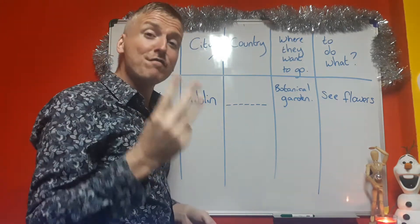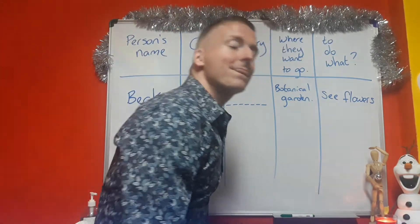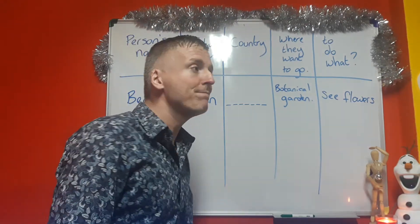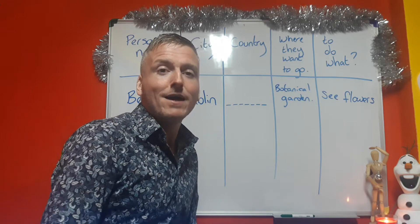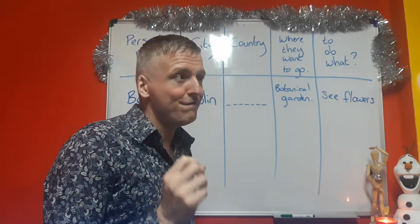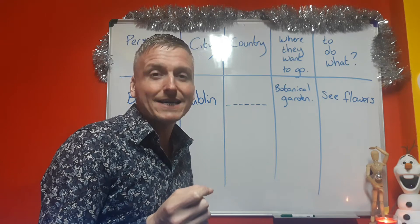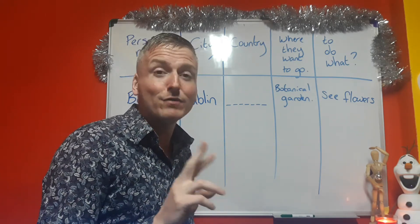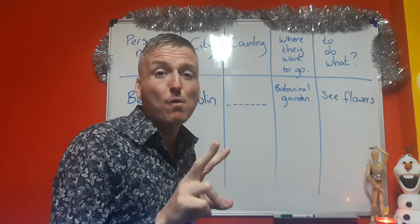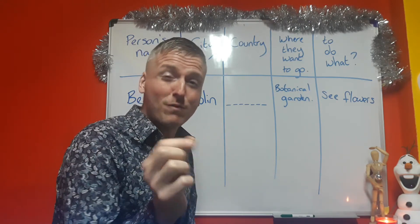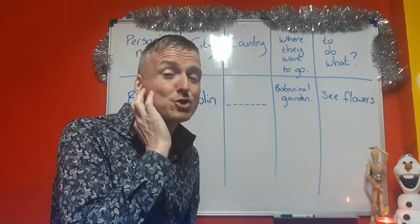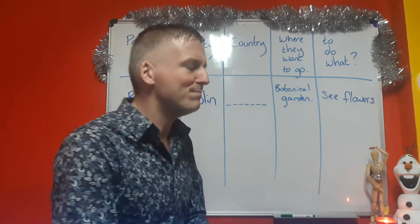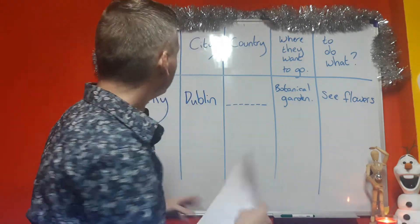I will say each conversation three times. The first time will be very fast, the second time normal, and the third time very slowly — the third time will act as me giving you the answers. If you listen twice and don't want the answer yet, rewind and try again. You can rewind as many times as you like.